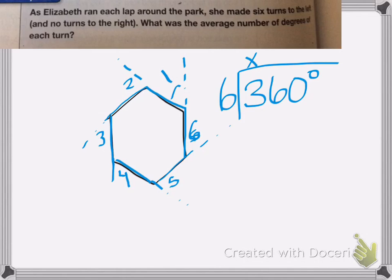So six can't go into three, six goes into 36 six times, that's 36, subtract it, bring down that last zero, six goes into zero, zero times. That means she turned an average of 60 degrees per turn.